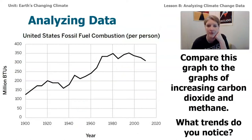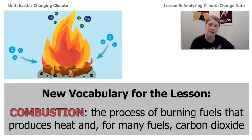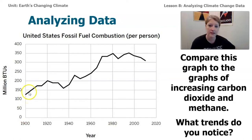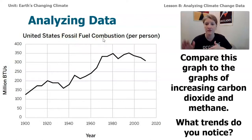As we look at the next couple of graphs, compare them with the carbon dioxide and methane graphs showing these gases increasing over time. This first graph is for United States fossil fuel combustion per person. The data starts around 1900, and while there are some big fluctuations, over time it seems to be increasing. This graph shows that fossil fuels burned in the United States have been happening at an increased rate over the last 100 years.